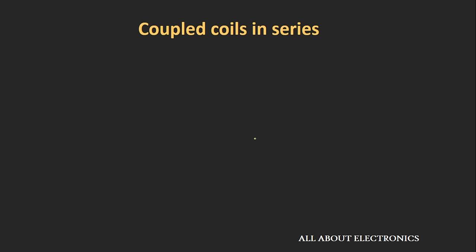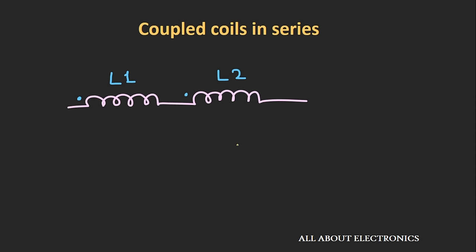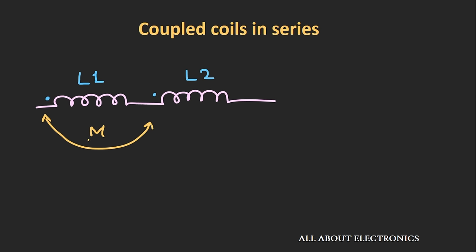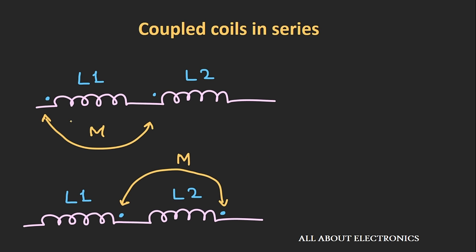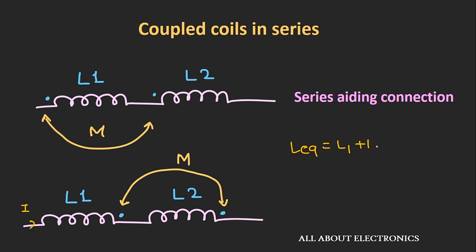Now let's see the expression for mutually coupled coils connected in series. Here two coils with inductances L1 and L2 and mutual inductance M are connected in series. The current I is entering the dot in the first coil and also entering the dot in coil number 2. So the flux generated by coils 1 and 2 is additive — this is known as a series adding connection. The value of the equivalent inductance will be L1 + L2 + 2M. Similarly, if dots are placed at the other ends, the current is leaving both dots — this is also a series adding connection with equivalent inductance L1 + L2 + 2M.